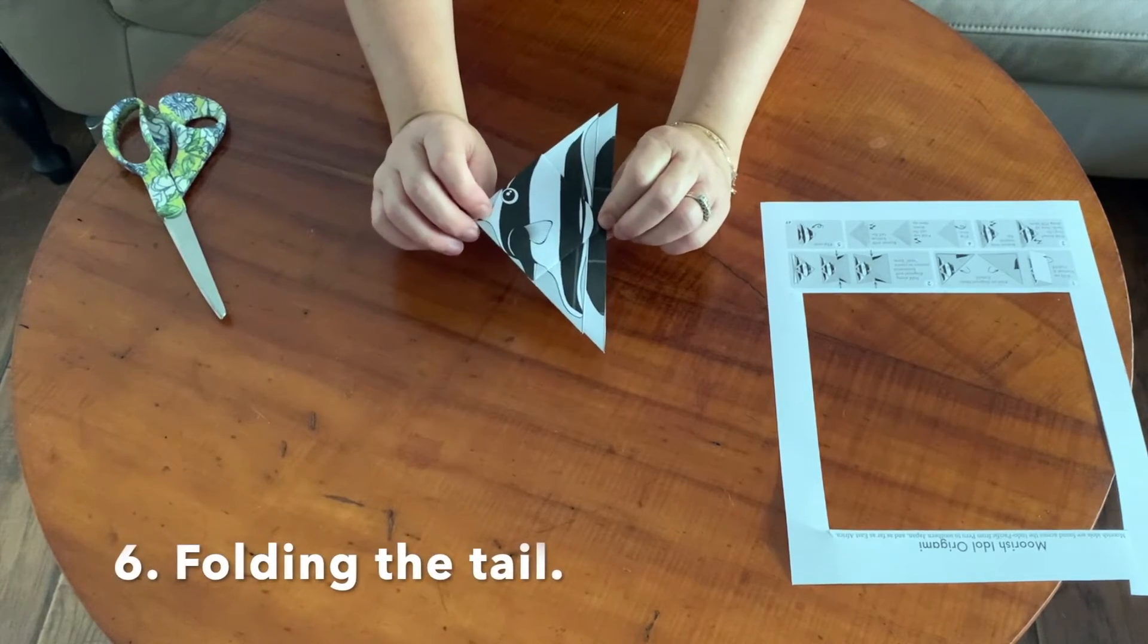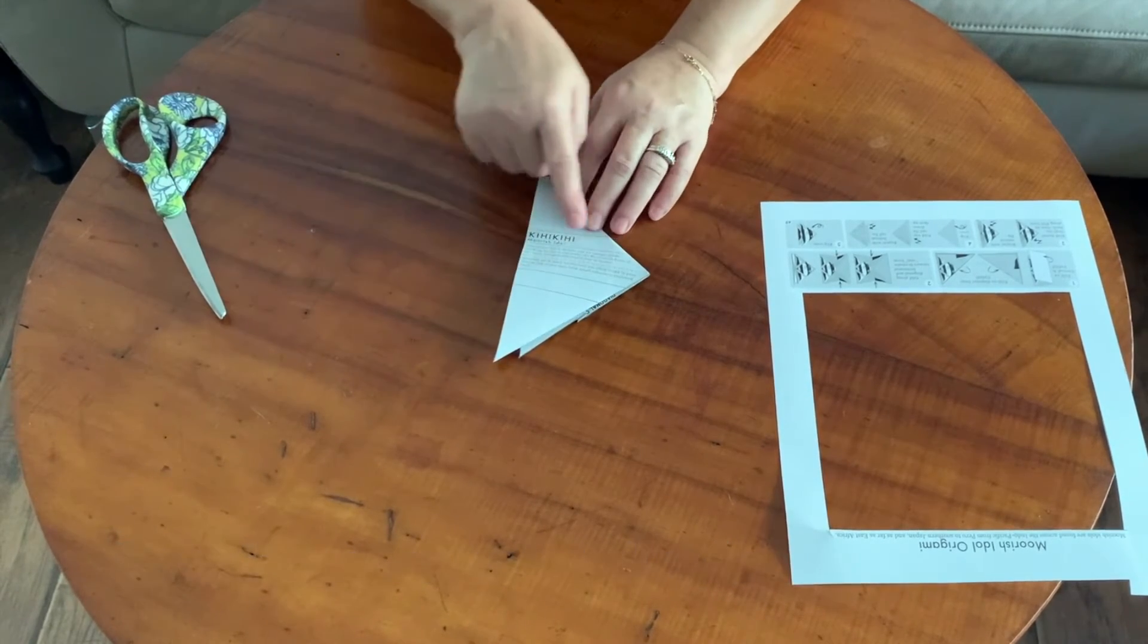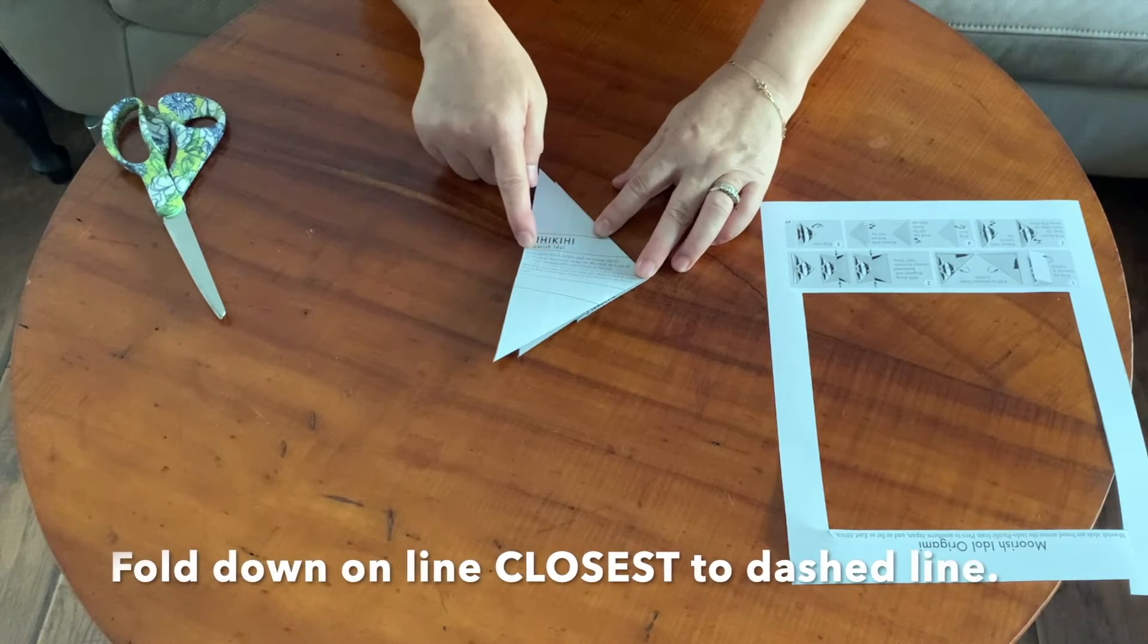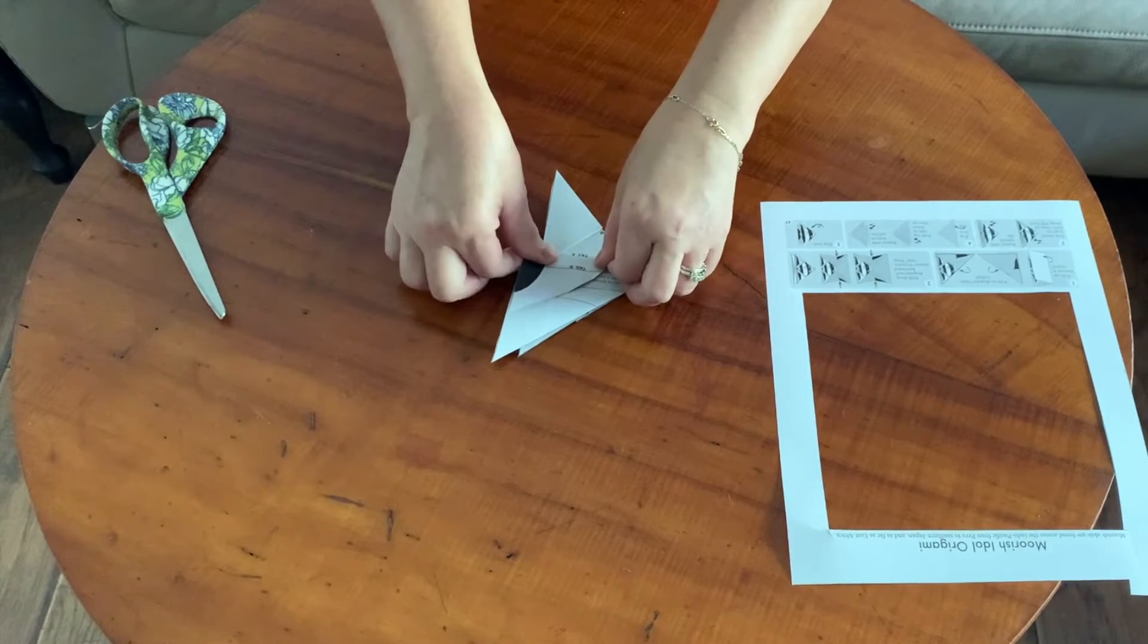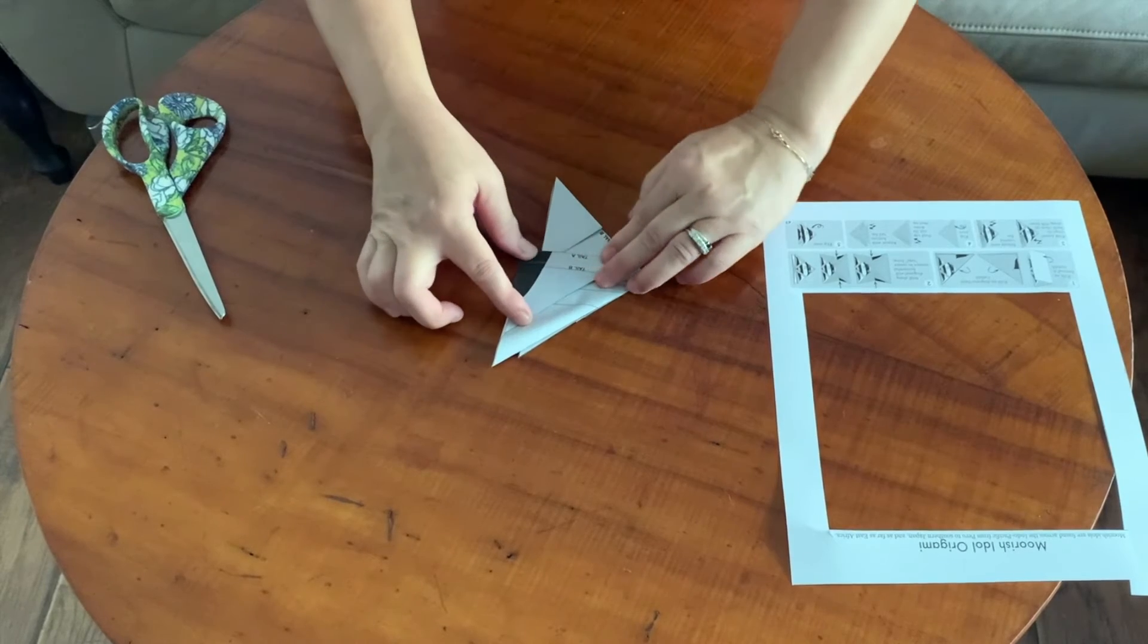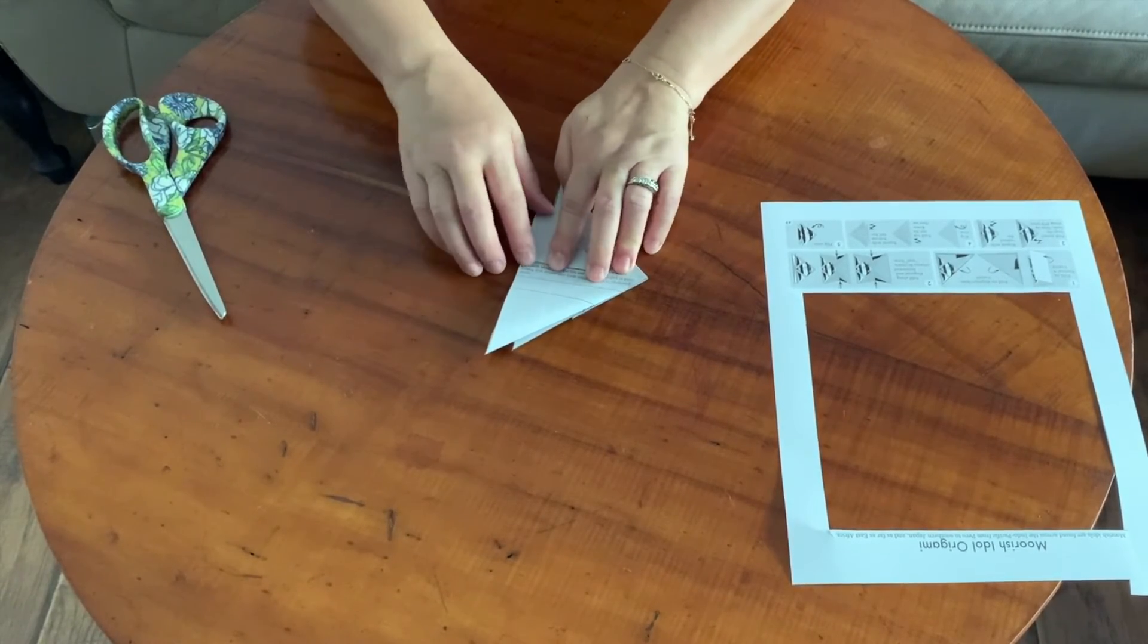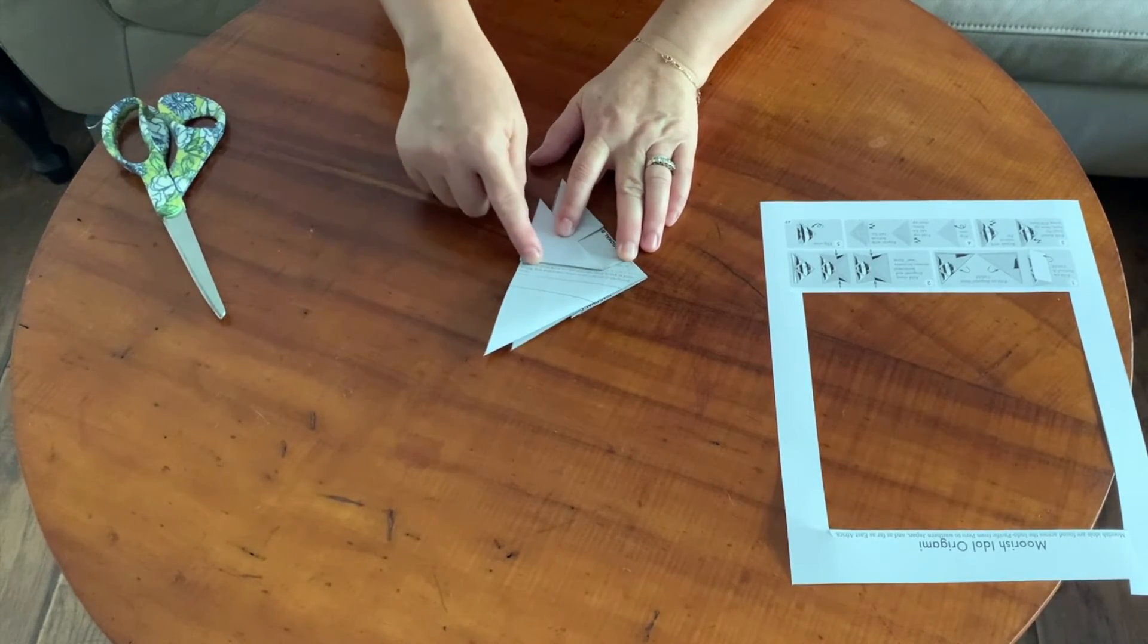Now last, we need to do the tail. So turn your origami over and you'll see two parallel lines on the top and a dotted line. You're going to fold down on the parallel line that's closest to the dotted line. Just do your best. And as you fold it over, you'll see that it says tail A, of course it's upside down for you. I'm going to flatten that up and then fold back up on tail B.